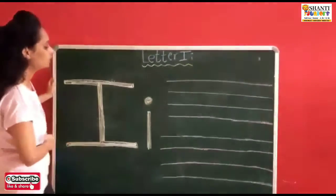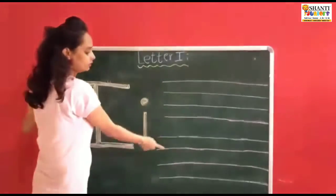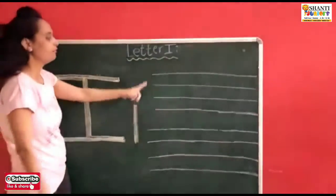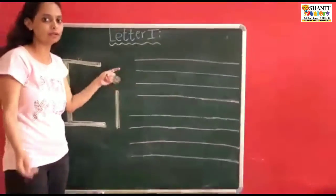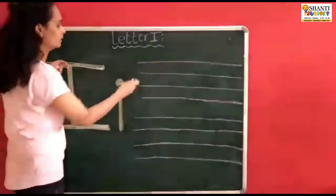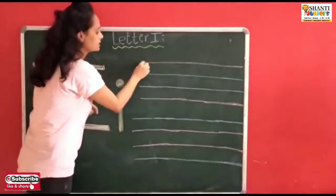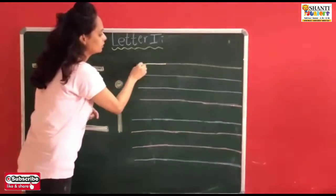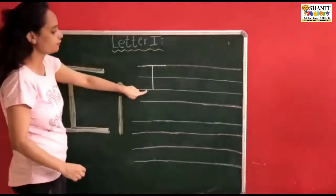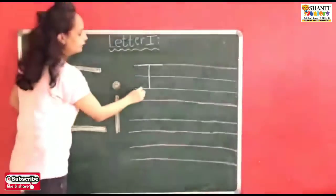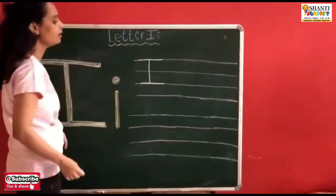So children, pay attention over here. This is your red and blue line book. So where you have to start and where you have to stop, just pay attention. Can you see this red line? You have to do the sleeping line, then standing line, and where the blue line is, there you have to do another sleeping line — it becomes letter I.